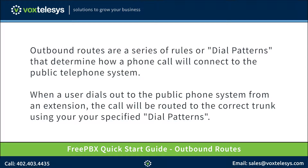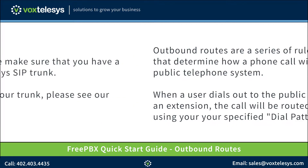Outbound routes are a series of rules, or dial patterns as they're called, that determine how a phone call will connect to the public telephone system. When a user dials out from an extension, the call will be routed to the correct trunk using your specified dial patterns.